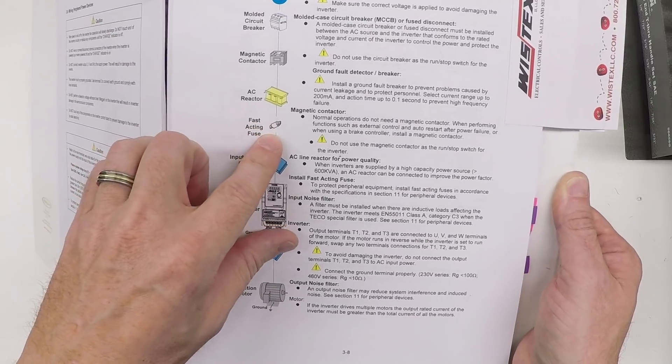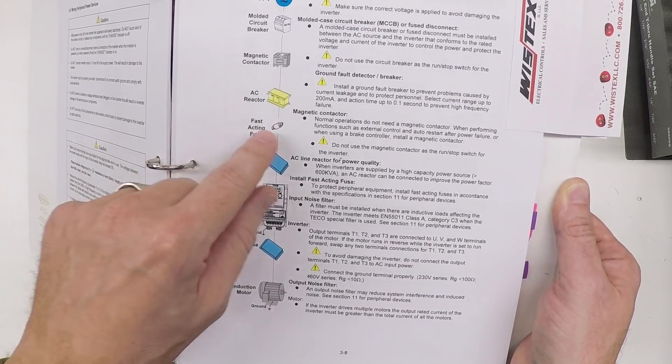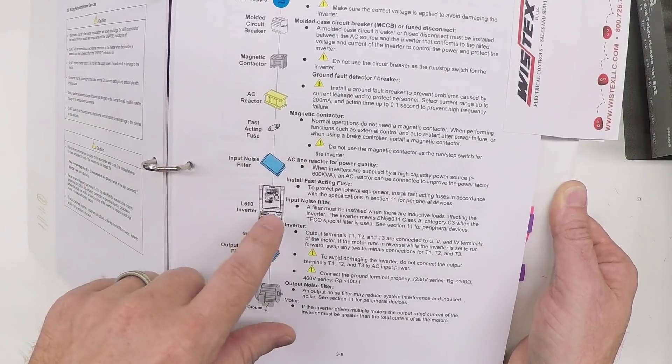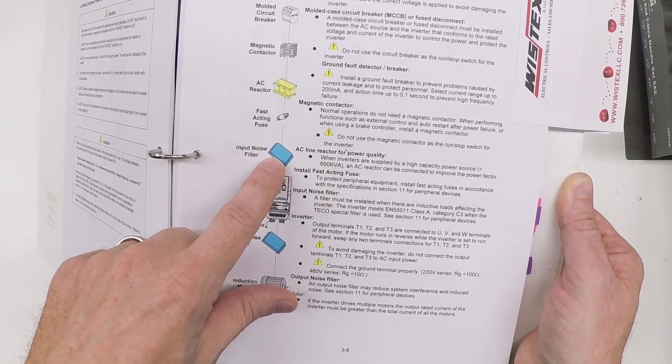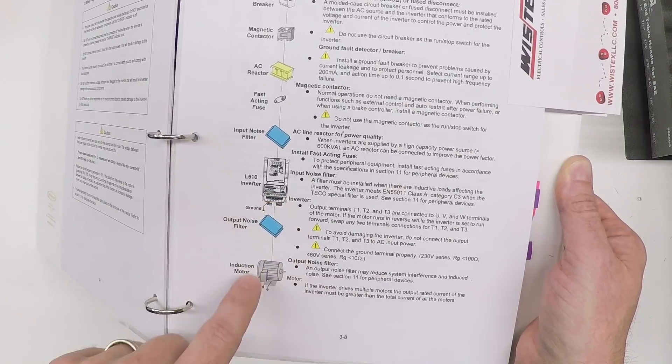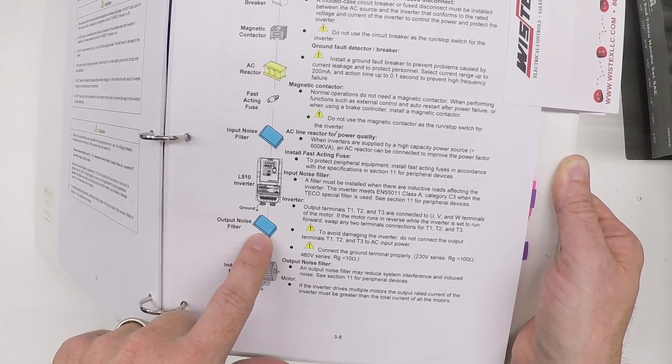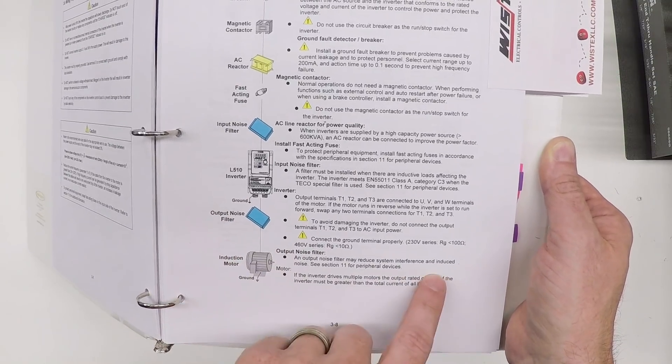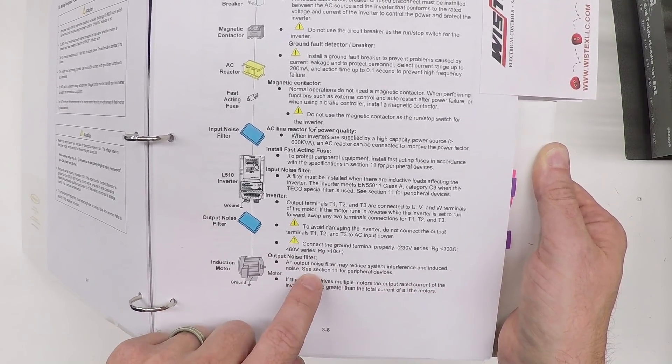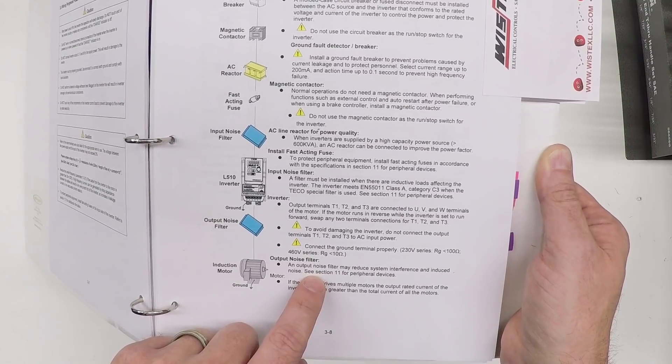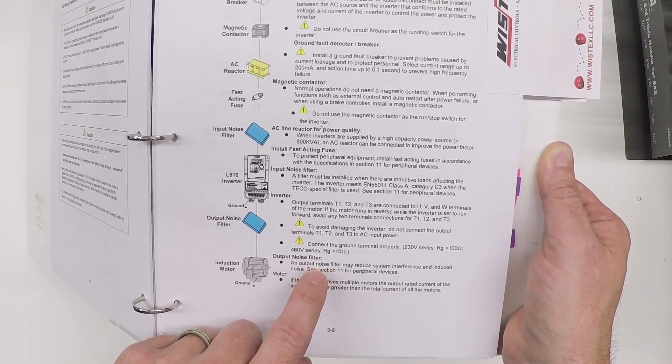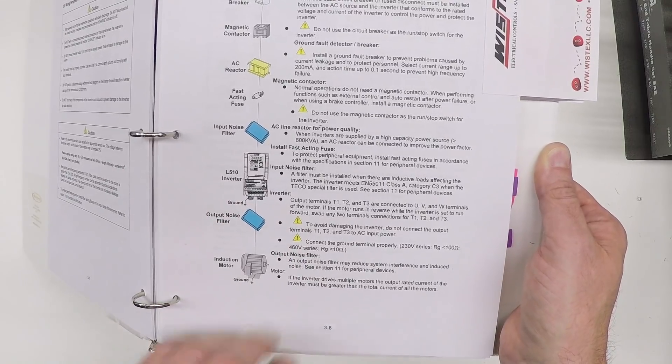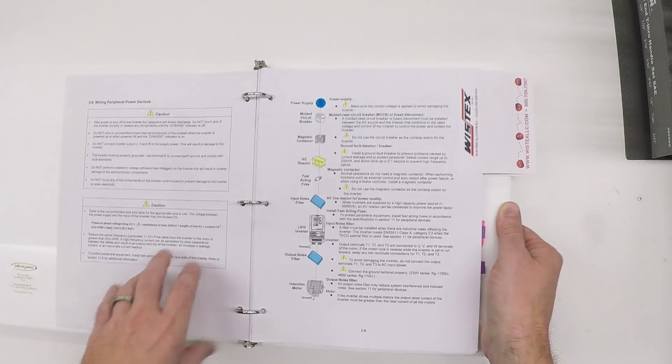Then they show a fast acting fuse. Why do you need a fuse when you've already got a circuit breaker? We can talk about that. Then the input noise filter, which we have, and then the inverter. On the output noise filter, this is specifically to reduce system interference. We actually put some chokes on the output to reduce interference, so we do have an output noise filter even though it's not a separate module. And then the motor.